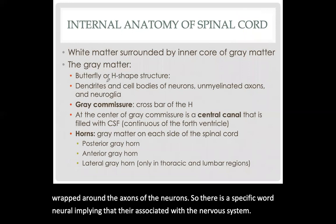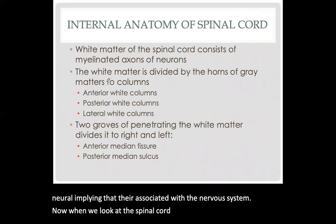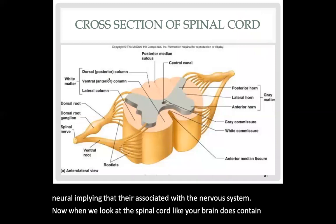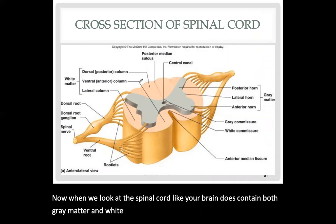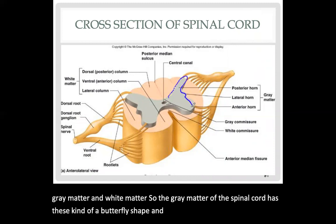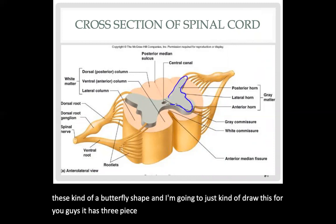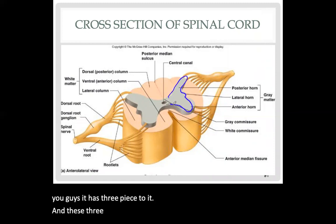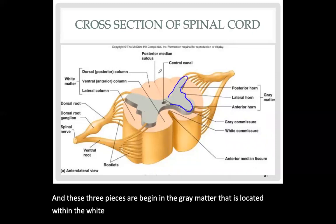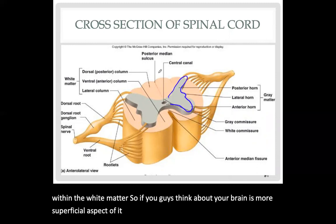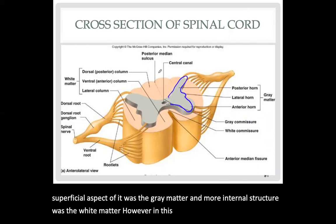When we look at the spinal cord, like your brain, it contains both gray matter and white matter. The gray matter of the spinal cord has this kind of butterfly shape with three pieces to it — the gray matter is located within the white matter. If you think about the brain, the more superficial aspect was the gray matter and the more internal structure was the white matter; however, in the spinal cord, the gray matter is deep inside the white matter.